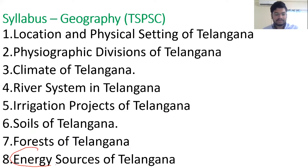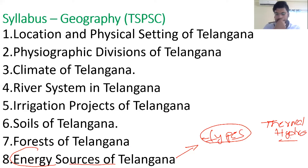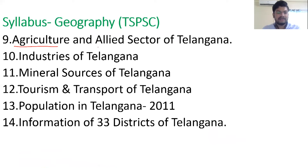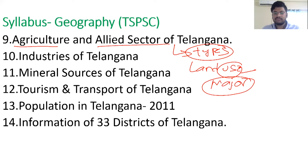The eighth chapter covers energy resources of Telangana — renewable and non-renewable. Under non-renewable, focus majorly on thermal and hydropower stations in Telangana and their capacity. The ninth chapter deals with agriculture and the allied sector: types of agriculture, land use patterns in Telangana, what percentage of land is net sown area, irrigated cultivated land, fallow land, pasture land, and the major crops grown in Telangana.